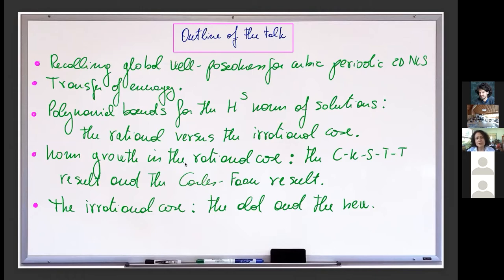In particular, in this context I will recall two previous results: one with the I-team — Colliander, Keel, myself, Takaoka, and Tao — and the other one by Carles and Faou. Finally, I will give some newer results on the comparison between the rational and irrational case for the torus, and some pictures coming from numerical experimentations that some of my collaborators did.